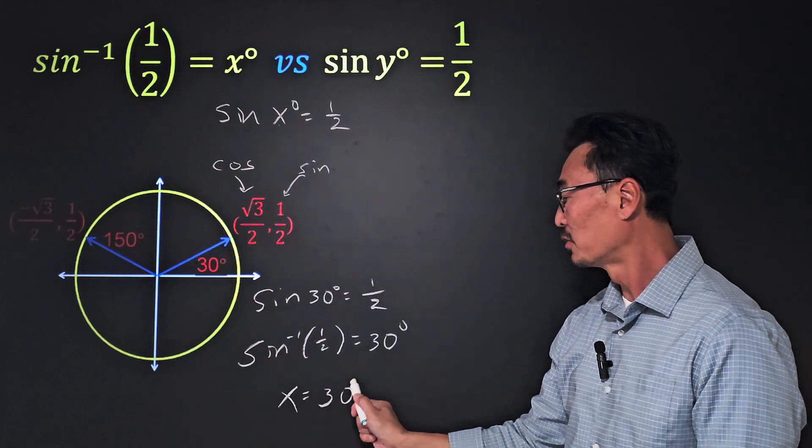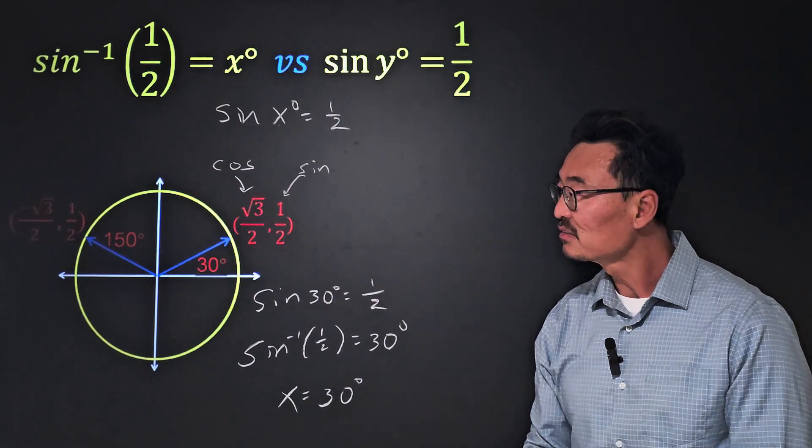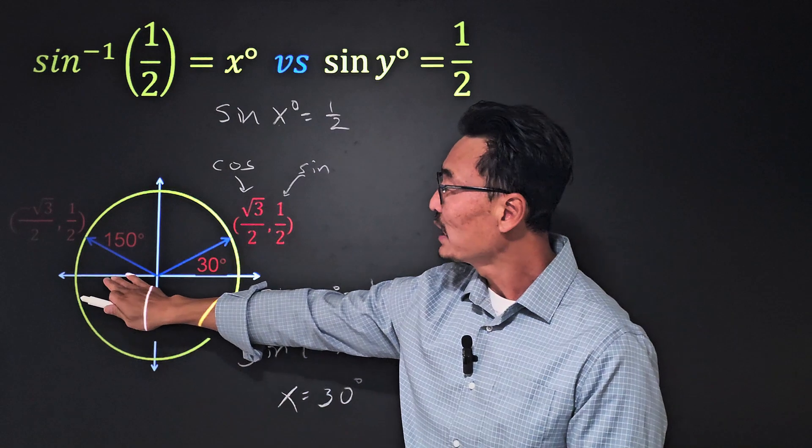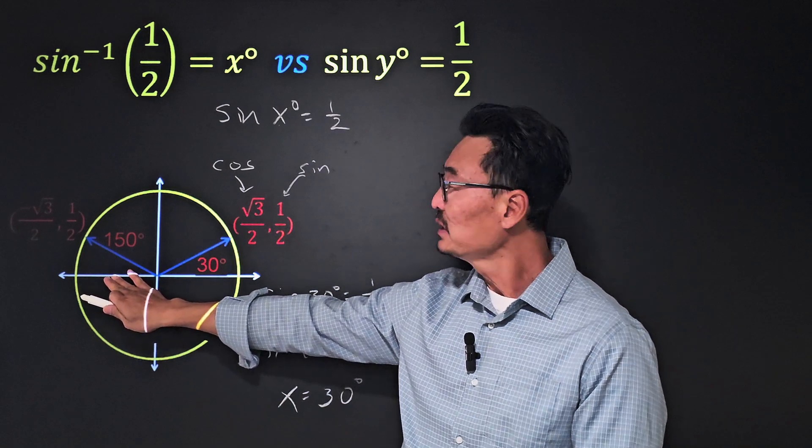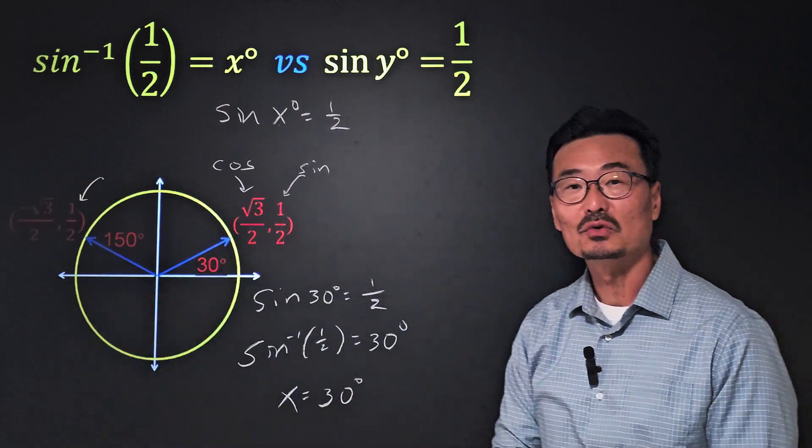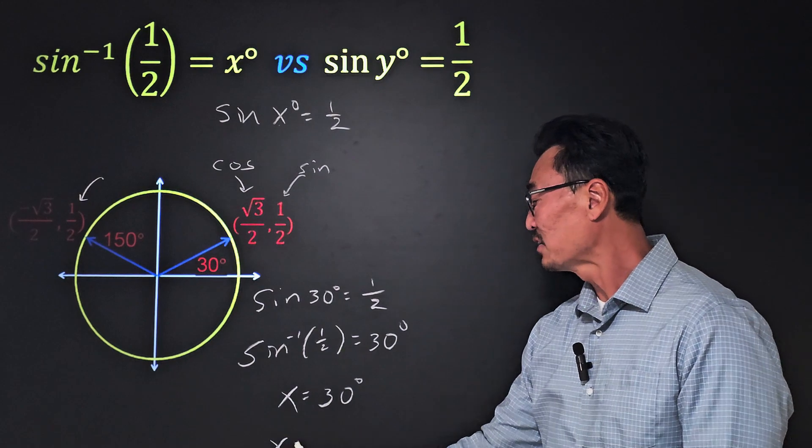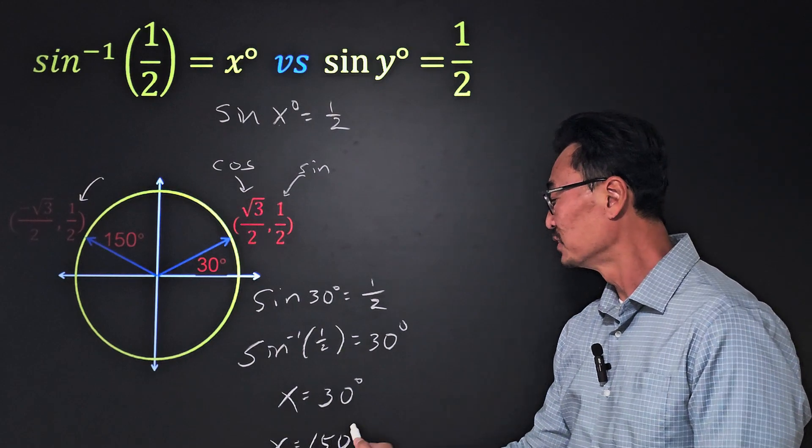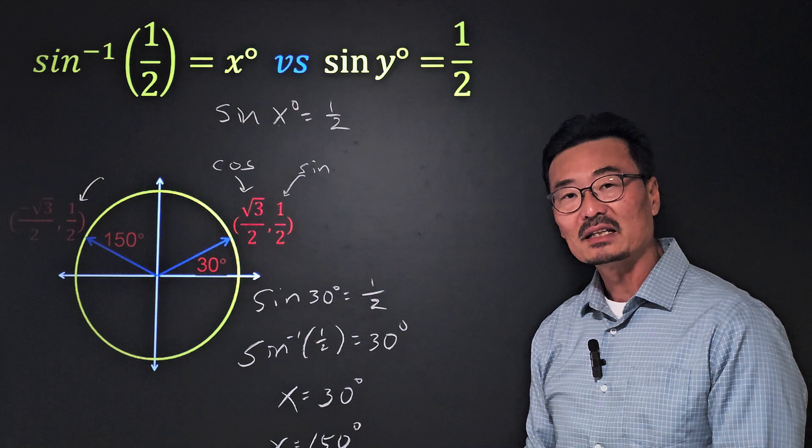What a lot of people tend to do is, since the value of 150 degrees, or sine of 150 degrees equals one-half, they would write down x equals 150 degrees as well.